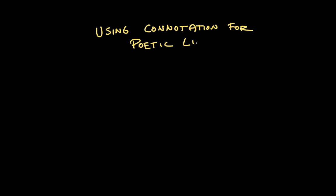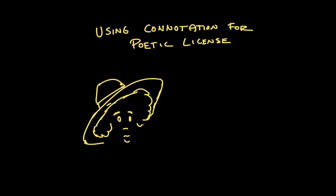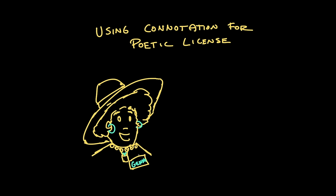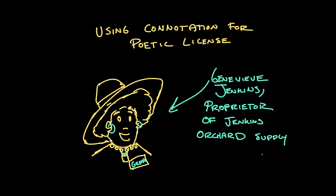Let's say I was writing a story about someone who started a plant nursery, and I wanted to use words that described growth, but I also wanted to build in connotations about nature or plants throughout the piece. In this example, I'm a newspaper reporter doing a profile of someone in my town — let's call her Genevieve. Genevieve Jenkins, proprietor of Jenkins Orchard Supply. She's ready for the outdoors: she's got her big sun hat, her hoop earrings, a little name tag, and a little plant necklace.